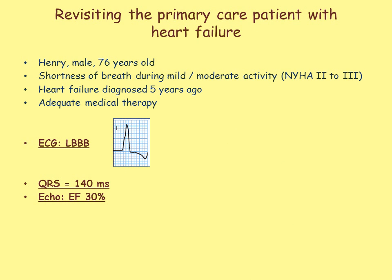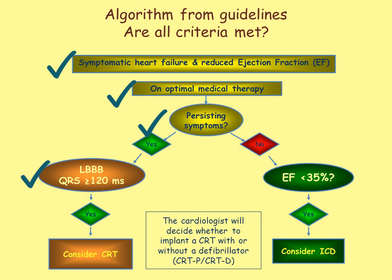Let's revisit our patient presenting to his GP with heart failure. Henry still complains of shortness of breath during mild to moderate activity. His ECG, taken by the GP, demonstrated left bundle branch block and a wide QRS complex. Henry deserved a discussion about the possibility of implanting a device. He was very pleased to hear that there might be another effective treatment option and was eager to visit the cardiologist. He was referred to an outpatient consultation, and the echocardiographic study revealed left ventricular dilatation and a reduced ejection fraction. Returning to the treatment algorithm, we see that Henry satisfies the initial criteria — he is on optimal treatment with a diuretic, ACE inhibitor, and beta blocker, but still remains symptomatic. The ECG confirms typical left bundle branch block and the echo confirmed poor systolic function.